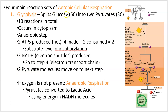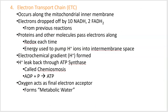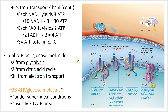To recap quickly: glucose is split into two pyruvates — six carbons into two three-carbon molecules — in glycolysis, in the cytoplasm. Then the transition reaction, then the citric acid cycle in the mitochondrial matrix. Finally, the electron transport chain takes all that potential energy from electrons built up in previous reactions through a complicated process to generate the bulk of our ATP.